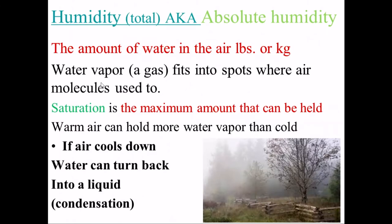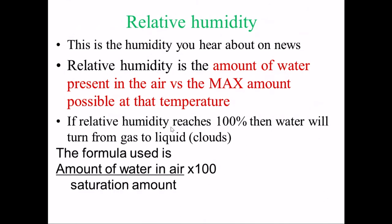Let's talk about humidity. It's tricky, because there's more than one type of humidity. There's absolute humidity and there's relative humidity. Absolute humidity is a basic measurement of how much actual water is in the air — how many kilograms or pounds of water is vaporized in the air. Saturation is the maximum amount of water that can be held in air at certain temperatures. The higher the temperature of the air, the more water it can hold; the colder the temperature, the less water it can hold. Relative humidity is a percentage — what percentage of the maximum amount of water is actually present in that air.